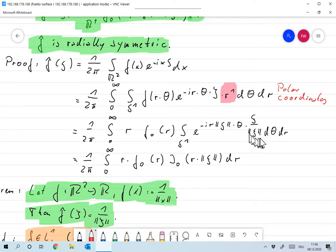And this one over here has norm 1. So according to what we just proved in the lemma, this is nothing but J0 of R times the norm of psi. And, well, everything else stays here. So that's exactly what I wanted to prove.